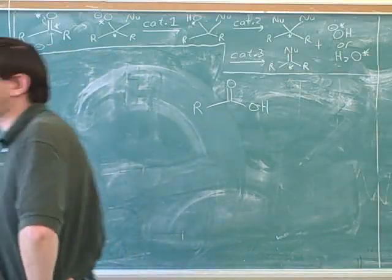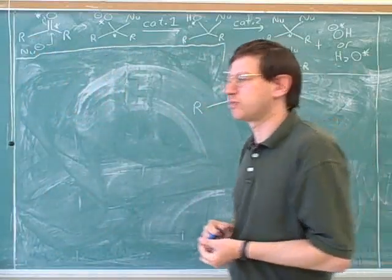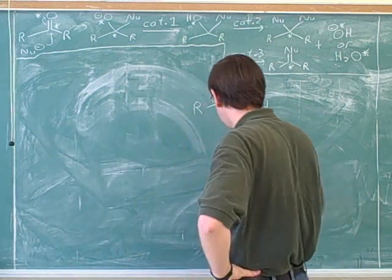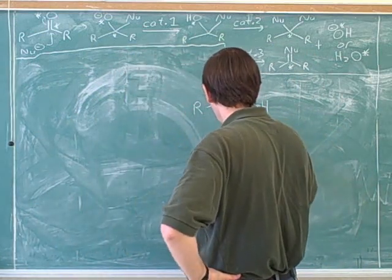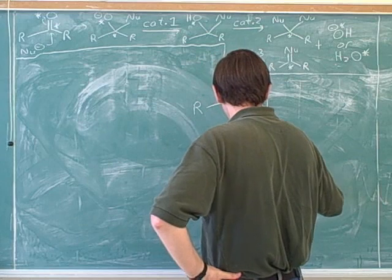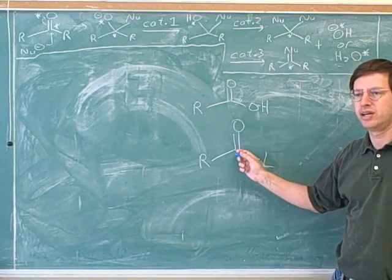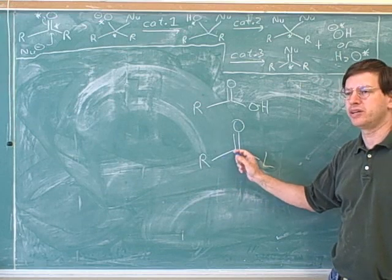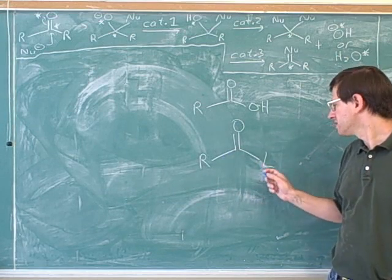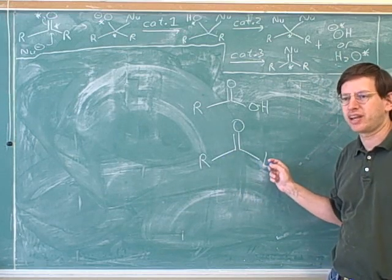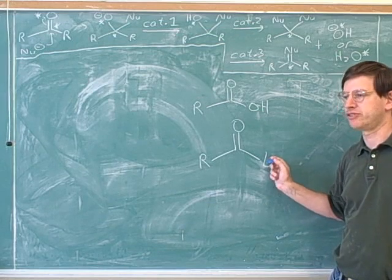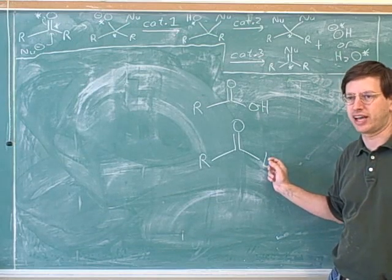Now would be a good time to talk about the common types of carboxylic acid derivatives. There are a bunch of compounds that have this form: a carbon group, a carbonyl, and then some other electronegative element here at this position. Those are generally carboxylic acids or carboxylic acid derivatives.